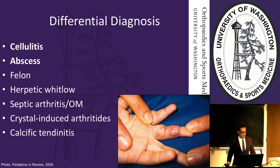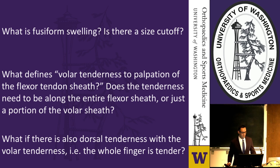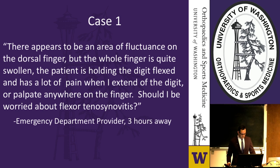The differential diagnosis of finger infections is broad. Cellulitis, abscess, herpetic whitlow, osteomyelitis, septic arthritis, crystal-induced arthritis, and calcific tendonitis can all have similar presentations. The challenge is that the four Cannavel signs are the primary clinical tool to diagnose flexor tendon infection, but they have not been validated and nothing has been shown to be better. Labs and imaging are relatively nonspecific, and we still don't know if one Cannavel sign is more sensitive or specific than the others. There is also subjectivity — what exactly is fusiform swelling, and what truly defines volar tenderness to palpation along the flexor sheath?